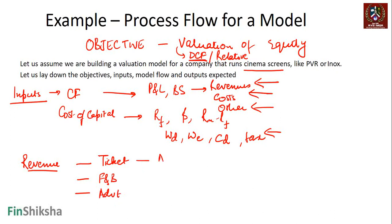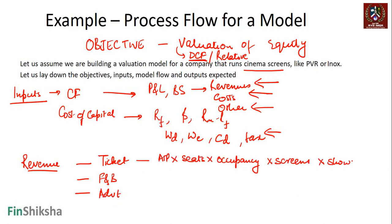Ticket sales come in the form of average ticket price multiplied by seats, multiplied by the occupancy - how many people come to the cinema hall. You can multiply it with the number of screens a company has and multiply it with the number of shows the company runs. So let's say one cinema hall has five screens running four shows a day, occupancy is 30%, seats are 300 per cinema, and average ticket price is 150. You can multiply and you'll get the revenue for that day. Multiply by 365 and you will get the revenue for the year. That's your model flow.